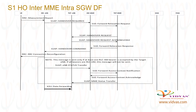Source ENB sends RRC connection reconfiguration message to UE, indicating to camp on to target ENB. S1AP ENB status transfer is sent by source ENB to source MME, only if at least one RLC-AM bearer is accepted by the target ENB. If all bearers are RLC-UM, the S1AP ENB status message will not be sent.